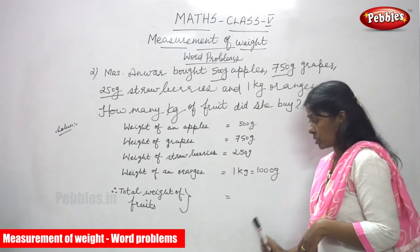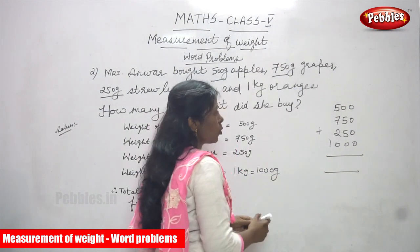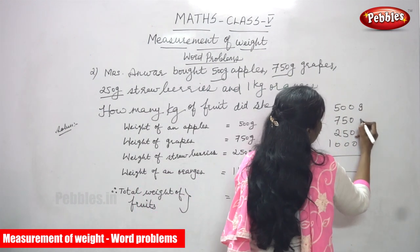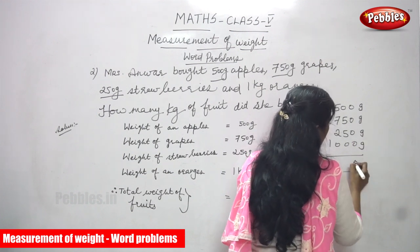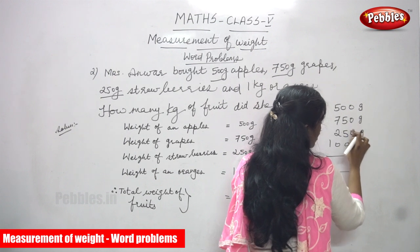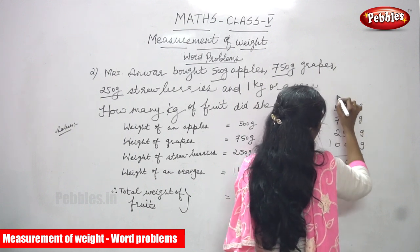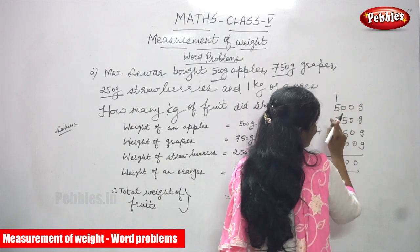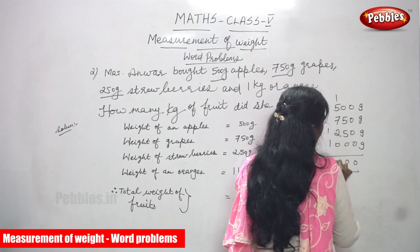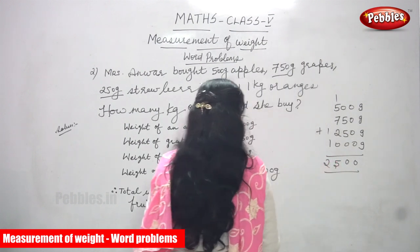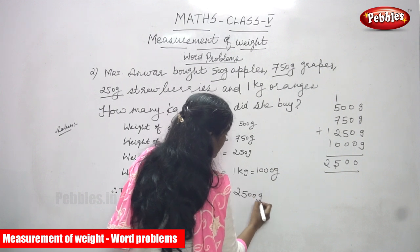So the total weight of fruits — you have to add all of them: 500 grams plus 750 grams plus 250 grams plus 1000 grams. Adding column by column: 0+0+0+0 = 0, 0+5+5+0 = 10 carry 1, 5+7+2+0+1 = 15 carry 1. The answer is 2500 grams.